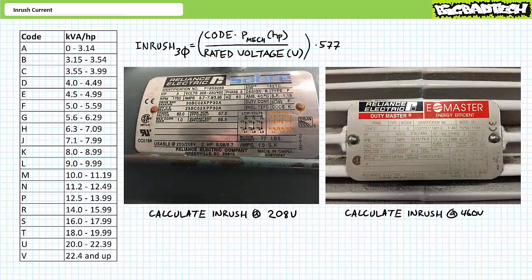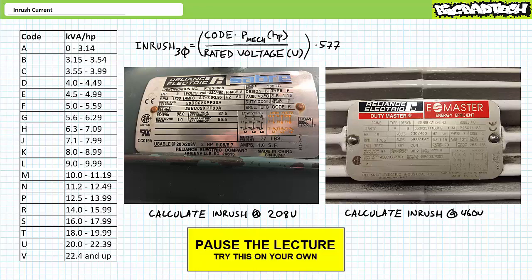Before we move on to the electrical theory describing inrush, let's put your knowledge of calculating inrush to the test with two illustrated examples. Given the data in the motor nameplates and the kilovolt ampere per horsepower constant table, see if you can calculate the anticipated average inrush for these two motors when placed in the specific voltage configuration. For both scenarios, let's use the center of mass or average of the kilovolt ampere per horsepower constant. Pause the lecture and try this on your own.